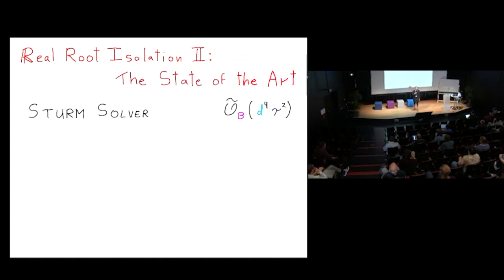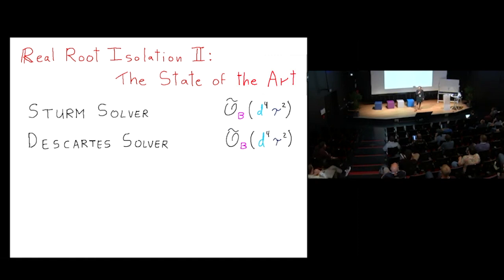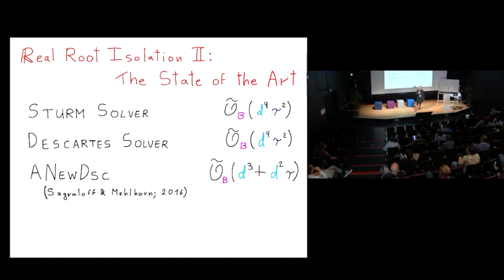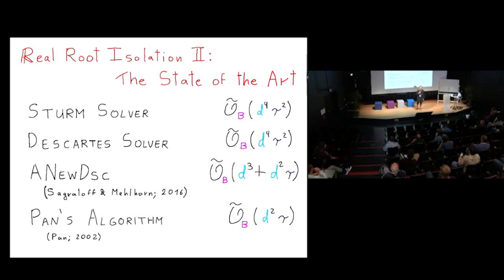The state of the art: the Strom solver uses the Strom count and achieves Õ(d⁴ · tau²). The CAR solver has the same worst-case order. Sagralov and Melhor developed a mixture of Descartes and Newton's method, obtaining d³ + d²·tau. But the champion is still Pan's algorithm, which is d²·tau.